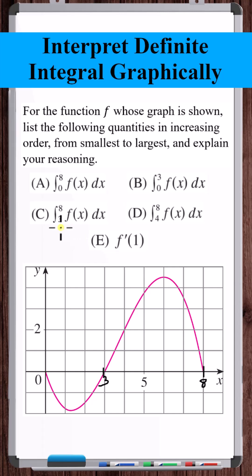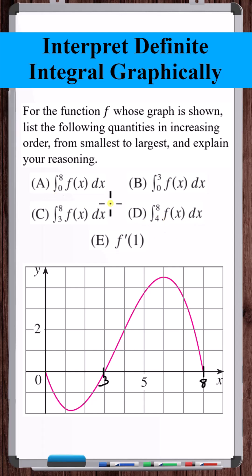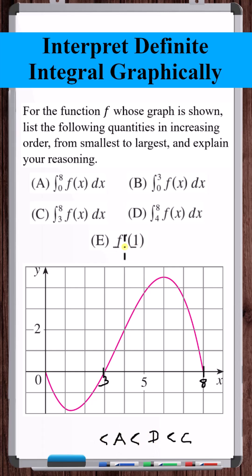We can also see that the definite integral from 8 to 3 will be larger than the definite integral from 8 to 4, and the definite integral from 8 to 4 will be larger than the definite integral from 8 to 0. So we just need to figure out which is more negative — e or b.